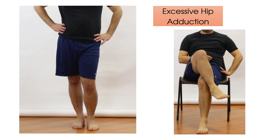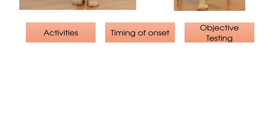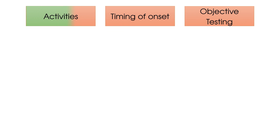This excessive adduction may occur in static positions, such as slouch standing or sitting with one leg crossed over the other. Another very common one is lying on the affected side at night. Also consider activities such as walking, running, or going up and down stairs, where poor hip control can lead to the hip being in a more adducted position during said activity.